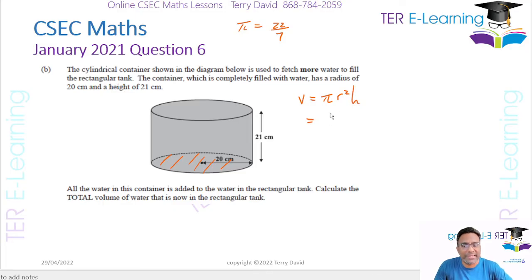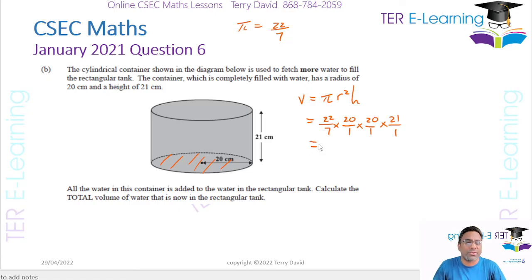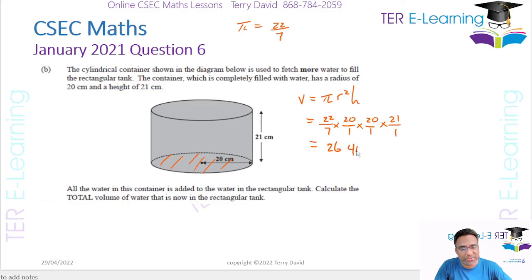The volume of a cylinder is the base area multiplied by the height, which is pi r squared h. So that's 22 over 7, multiplied by 20 squared — that's 20 over 1 by 20 over 1 — multiplied by 21. Working that out: 22 over 7 multiplied by 20 by 20 multiplied by 21 gives us 26,400. So the volume of water in this cylindrical container is 26,400 cm³.